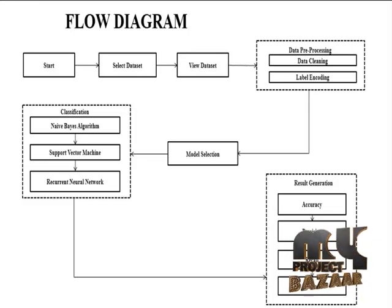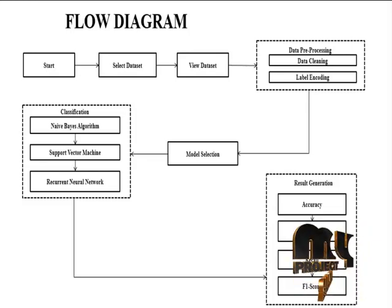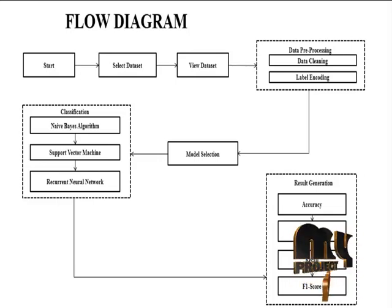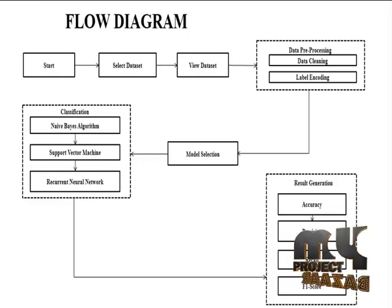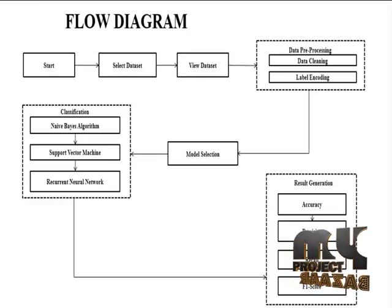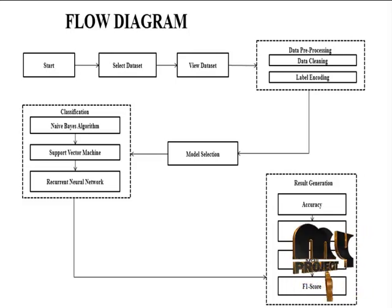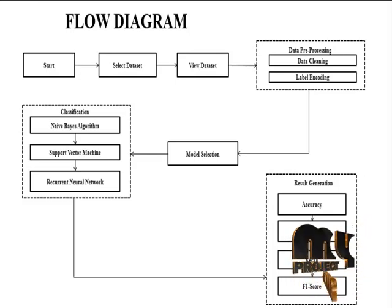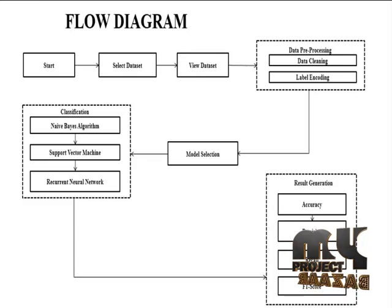Then it will move into label encoding. In label encoding, we are going to convert string datasets into numerical data. After that, it will apply into model selection. In model selection, we are going to select the independent variable and dependent variable.